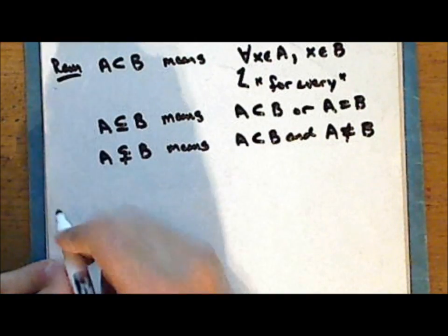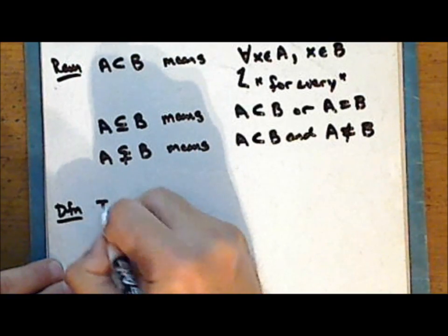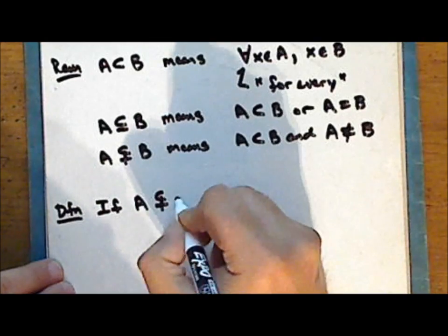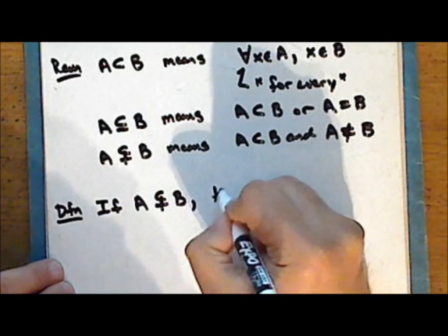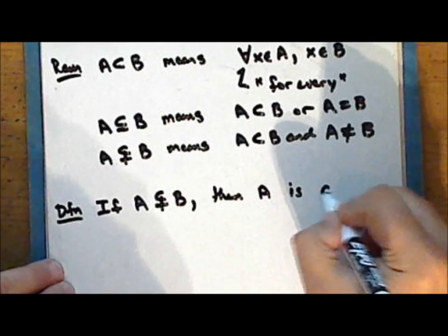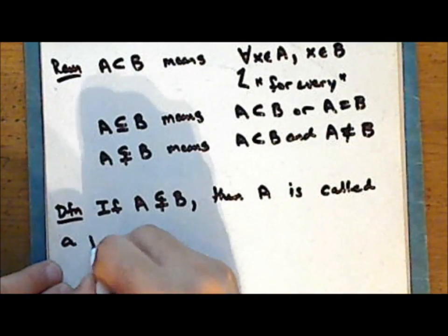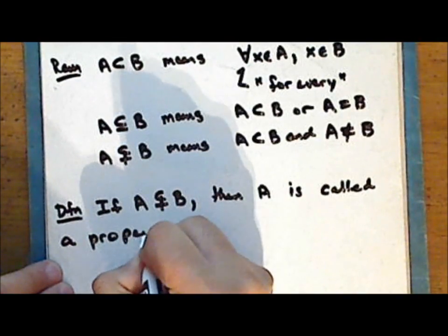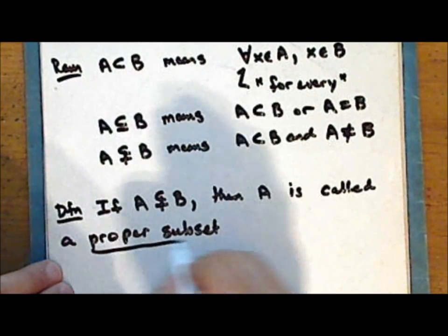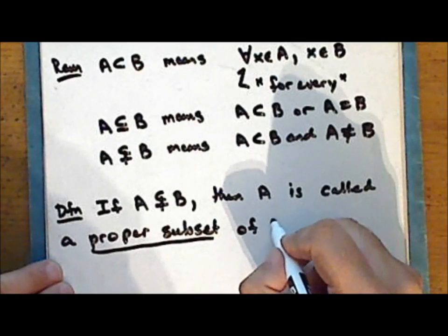So now we can give a new definition. If A is a subset of B which is not equal to B, then A is called a proper subset of the set B.